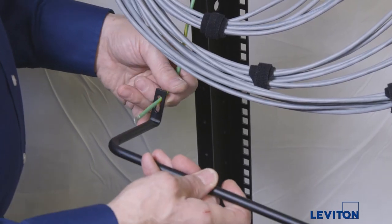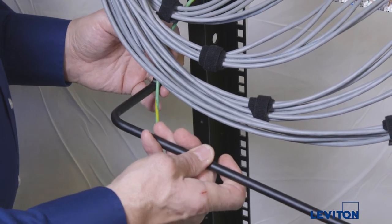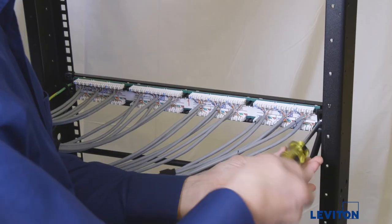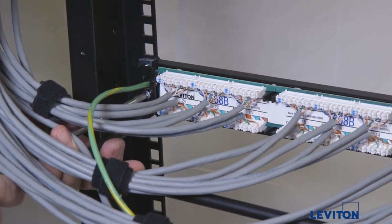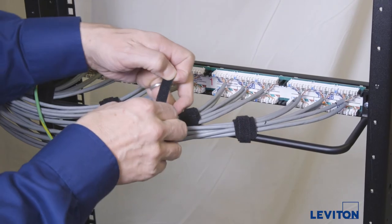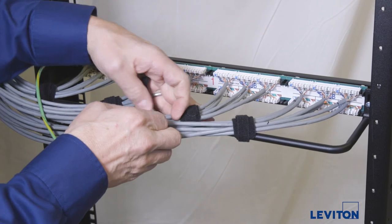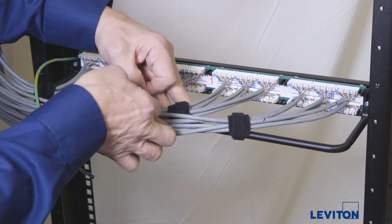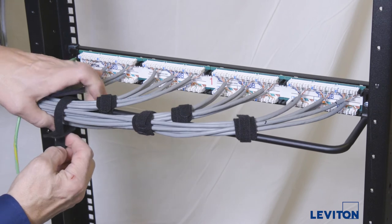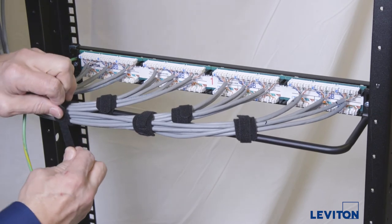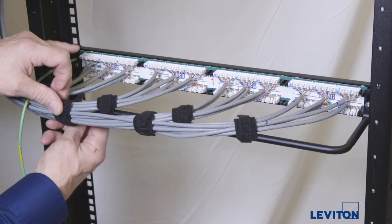To attach the cable management bar thread the ground lead through the bar. Attach the bar to the patch panel with two M4 screws. Unfasten the four velcro ties and reposition them to secure the bundles to the cable management bar. Wrap additional velcro ties around the cables and bar to create a neat cable bundle.